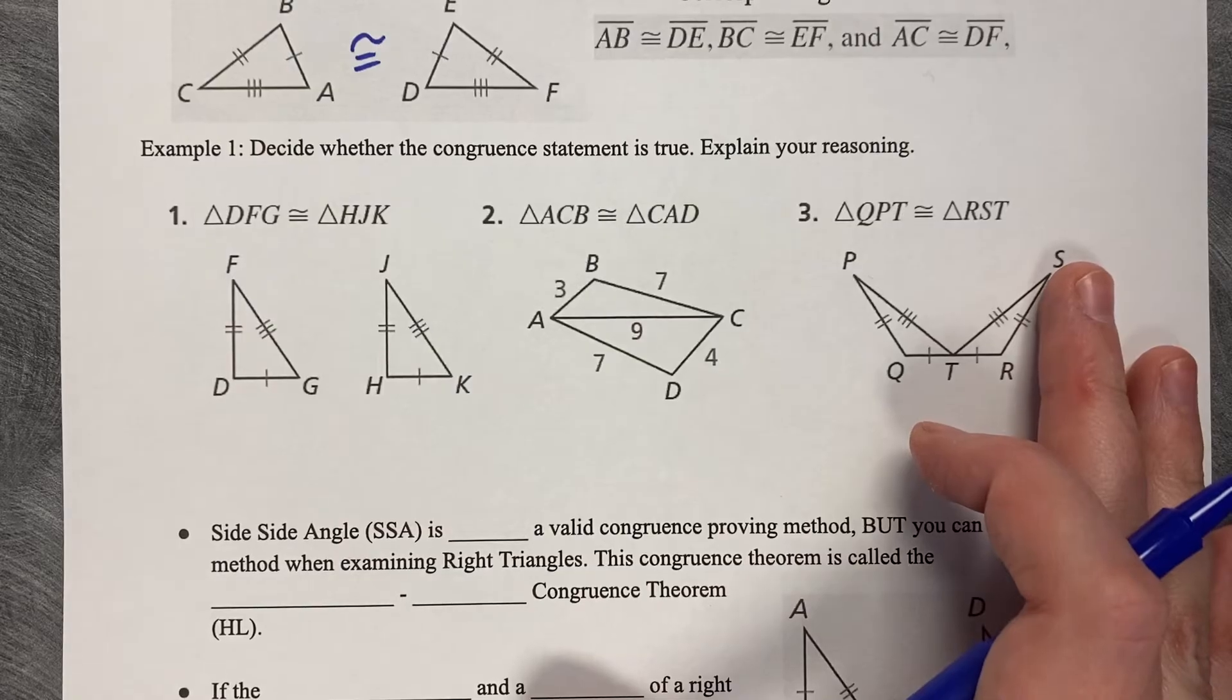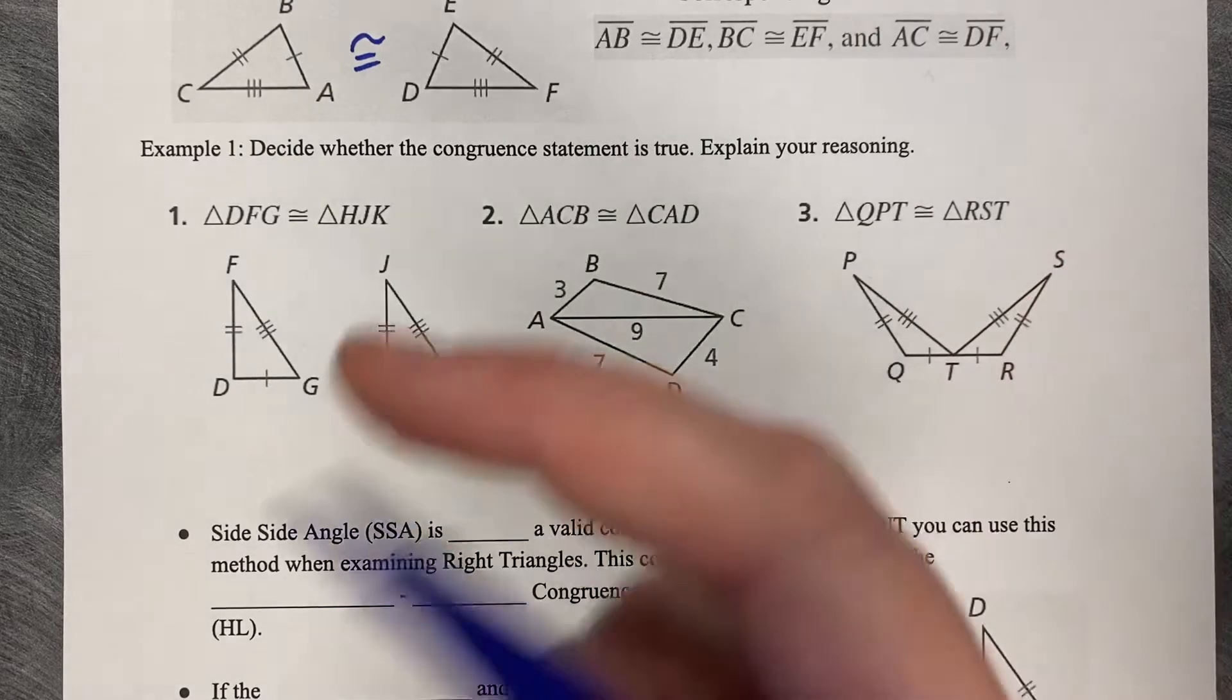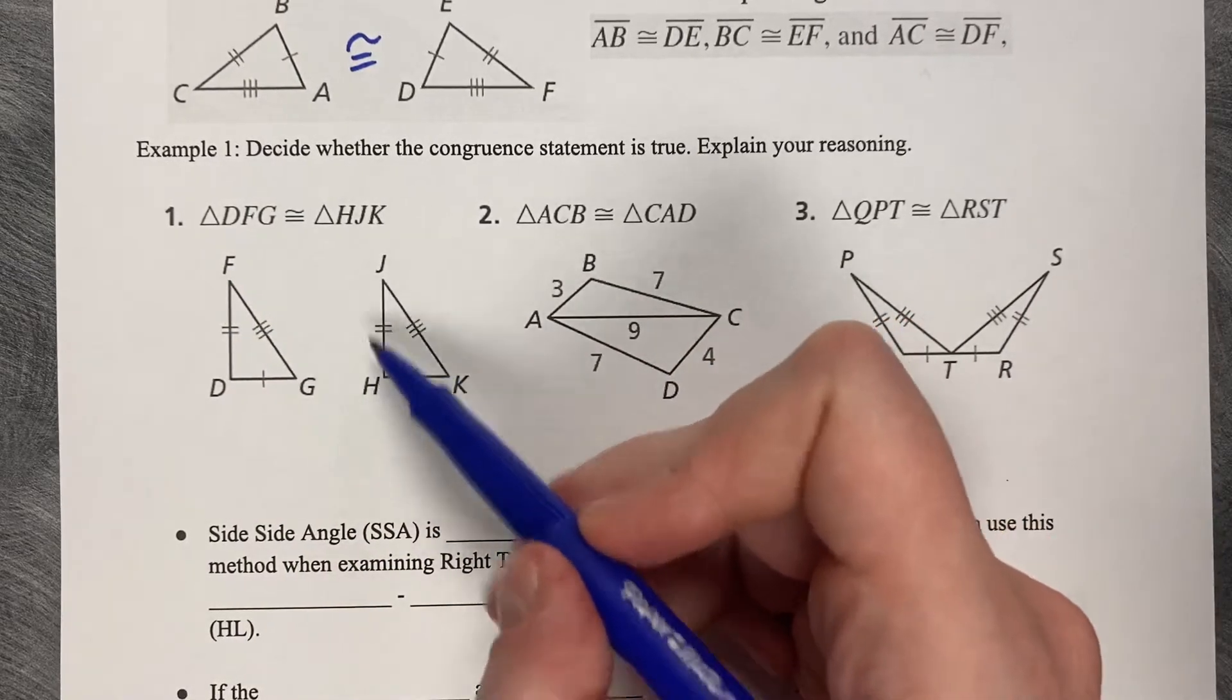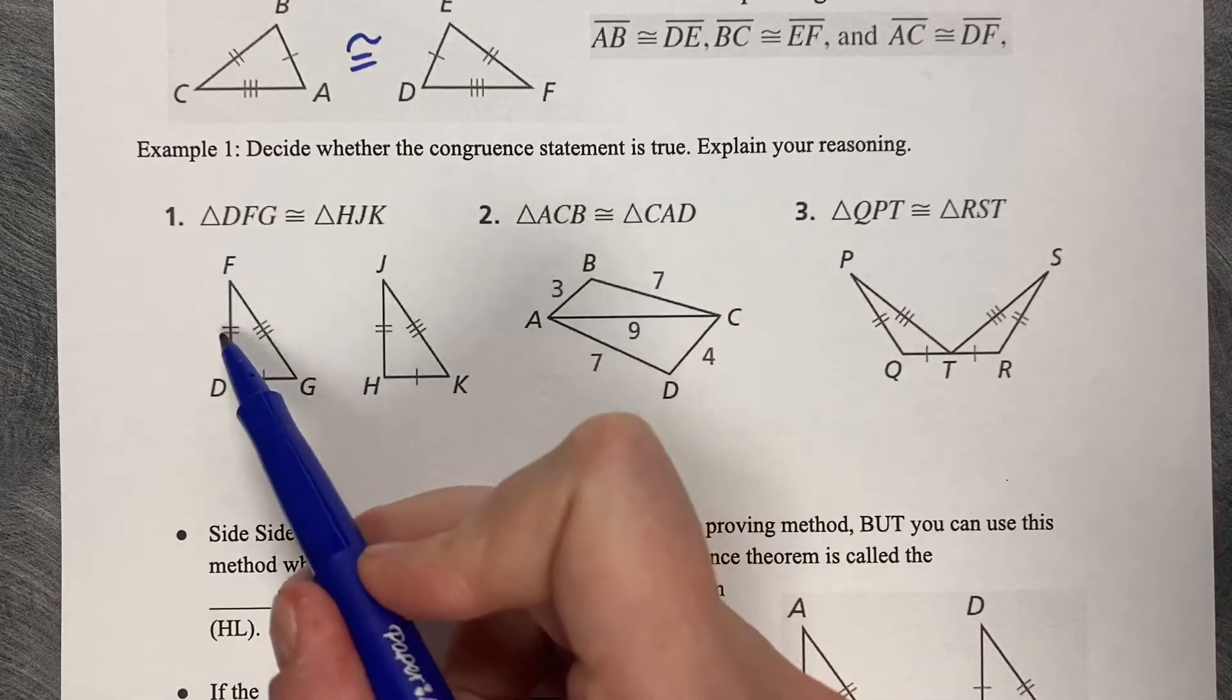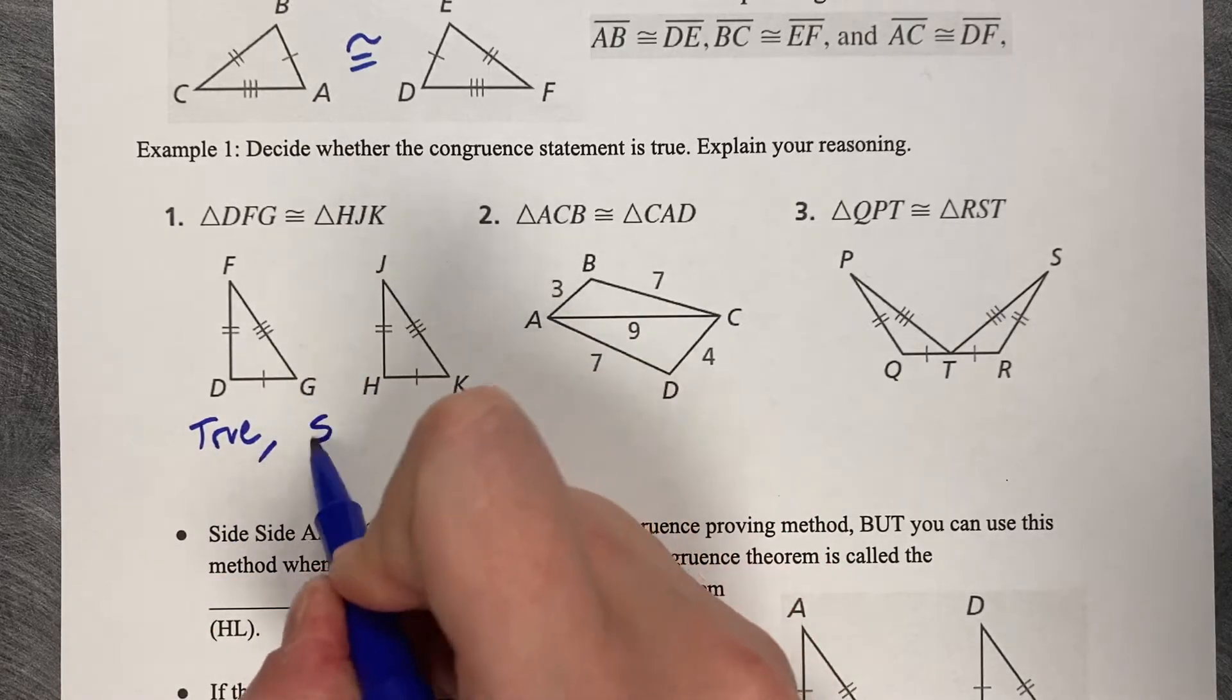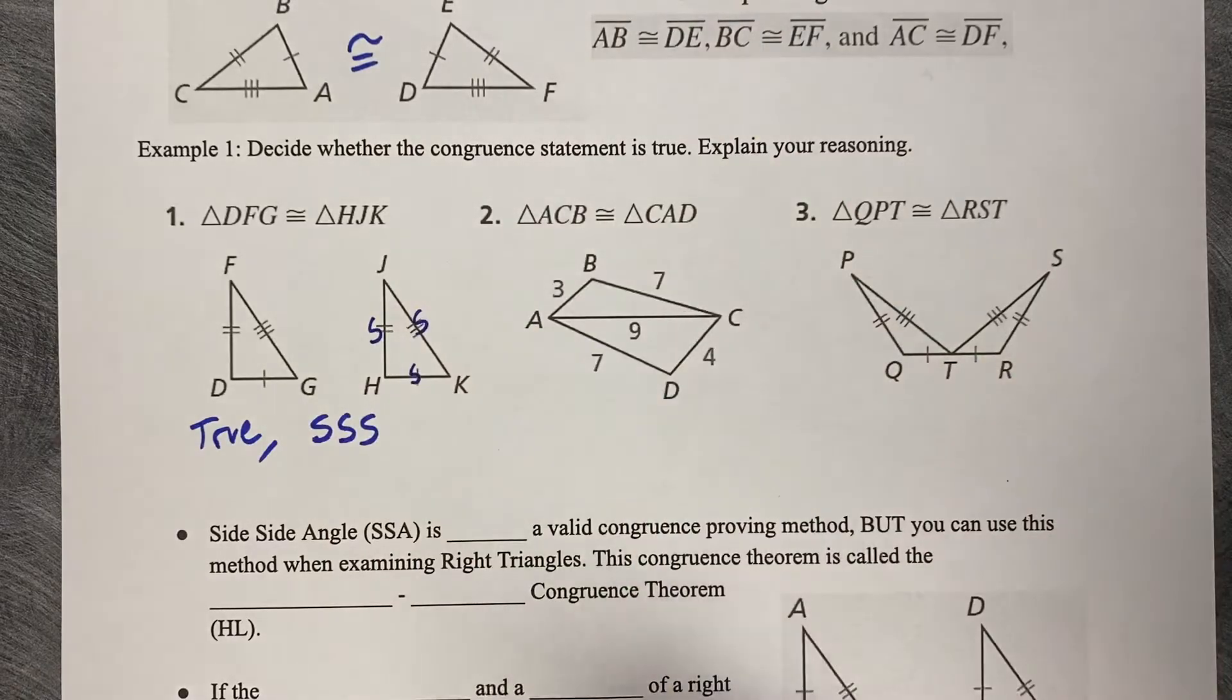Decide whether the congruent statement is true. For this first one, is triangle DFG congruent to HJK? 1 to 1, 2 to 2, 3 to 3, this is true by side-side-side. I can see three sides that match to the other triangle.